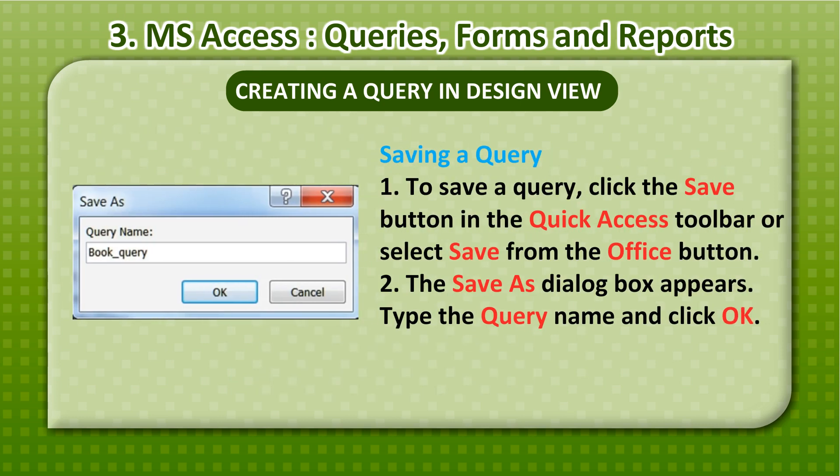To save a query, click the Save button in the Quick Access toolbar or select Save from the Office button. The Save As dialog box appears. Type the query name and click OK.